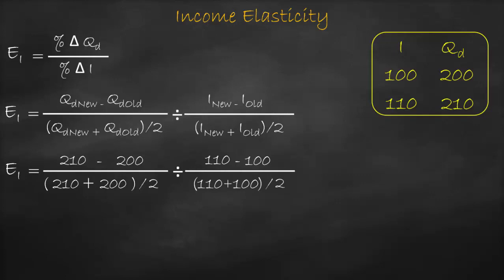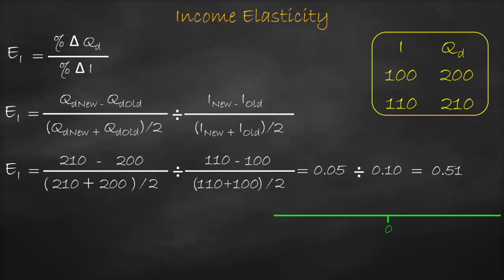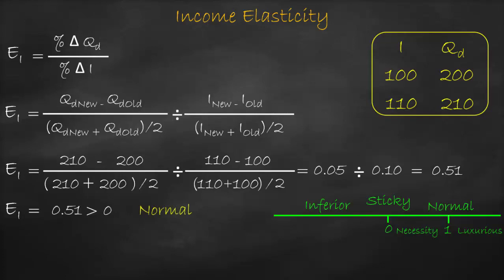This gives us 0.05 divided by 0.10, which equals 0.51. The benchmark for income elasticity is zero: equal to zero means sticky, bigger than zero means normal, lower than zero means inferior. For a normal good, we have another benchmark of 1: between 0 and 1 is necessity, bigger than 1 is luxurious. Our income elasticity is 0.51 — it's bigger than zero so it's a normal good, and since 0.51 is lower than 1, it is a necessity.